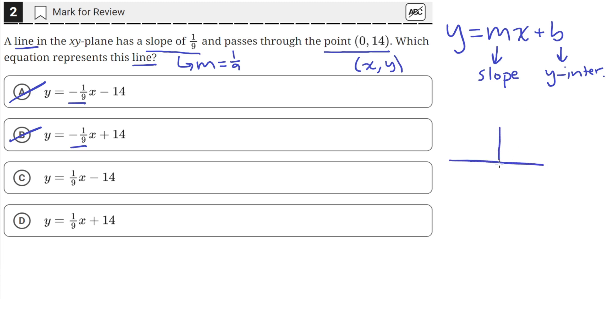If we draw this here, we have x and y-axes. The point (0, 14) is somewhere on the y-axis at a y-value of 14, since x is just 0.